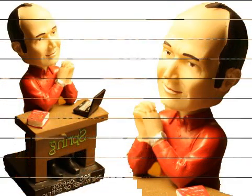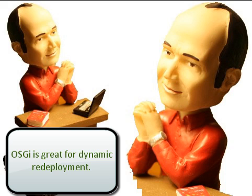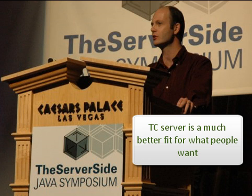For example, OSGi is fantastic if you're building a very platform-specific environment where you're kind of assembling your own server that has an unusual footprint — OSGi is great for that. OSGi is also great for dynamic redeployment. The Spring DM server product that we took to Eclipse as Virgo — if you want to use OSGi, this is the best way to do it.